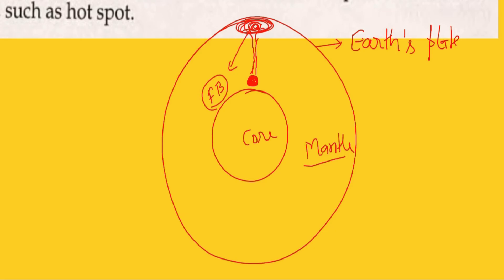The flood basalt slowly starts moving away, and when it moves away it causes friction on the Earth's plate. Under this frictional drag, the Earth's plate breaks and starts diverging. The magma here starts becoming heavy and moving down, so the plate starts moving with respect to this basaltic region.